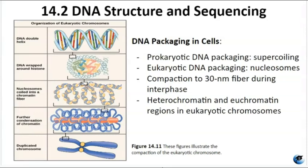Histones are conserved proteins that are rich in amino acids and combine to make nucleosomes, which look like beads on a string with DNA tightly wrapped around them. Adjacent nucleosomes are connected by linker DNA, and another histone forms a fiber around the chromatin. During metaphase, chromosomes get even more condensed with scaffolding proteins to about 700 nanometers in width. During interphase, eukaryotic chromosomes exhibit two distinct regions: heterochromatin, which is densely packed and contains non-expressed genes found near the centromere and telomere, and euchromatin, which is less dense and contains actively transcribed genes.